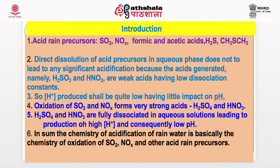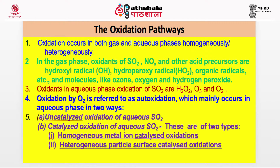In the aqueous phase, the oxidants for SO2 and other acid precursors include: for gas phase oxidation of SO2 — hydroxyl radicals, hydroperoxyl radicals, organic radicals, and molecules like ozone, oxygen, and hydrogen peroxide. For aqueous phase oxidation of SO2, the important oxidants are H2O2, ozone, and O2. Oxygen is always present at 21%. H2O2 and ozone are secondary pollutants also always present in the atmosphere.